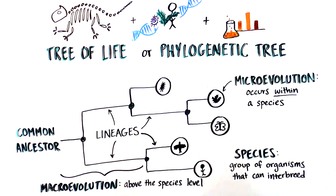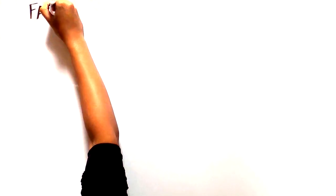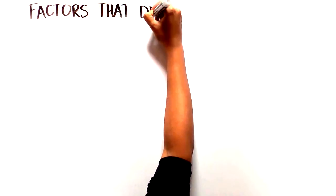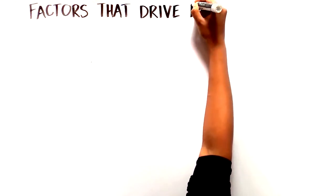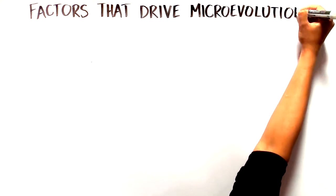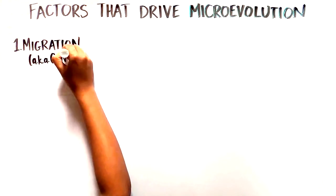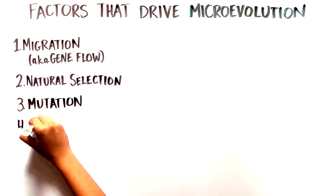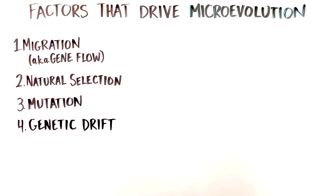Let's zoom in to talk about microevolution. Every population contains inherent variation, and there are multiple factors that can influence how frequently a given variant is found in that population. These factors include migration, also known as gene flow, natural selection, mutation, and genetic drift, and they drive microevolution within a population.